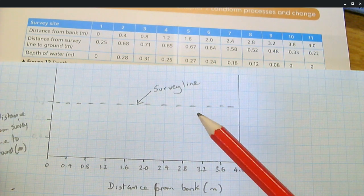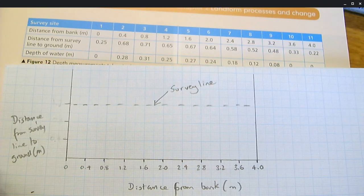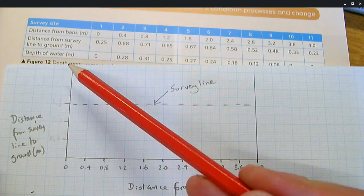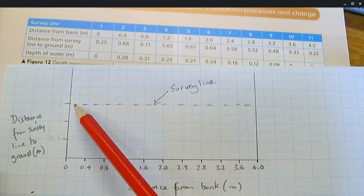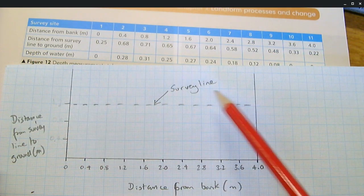Here you can see that you've got the outline of your cross-section. So we've got this y-axis here, which is labeled distance from survey line to ground. And this being the survey line, which is put on one side of the river to the other side.